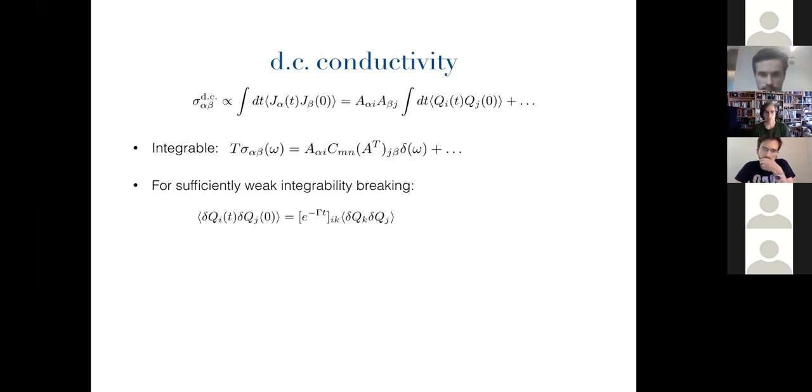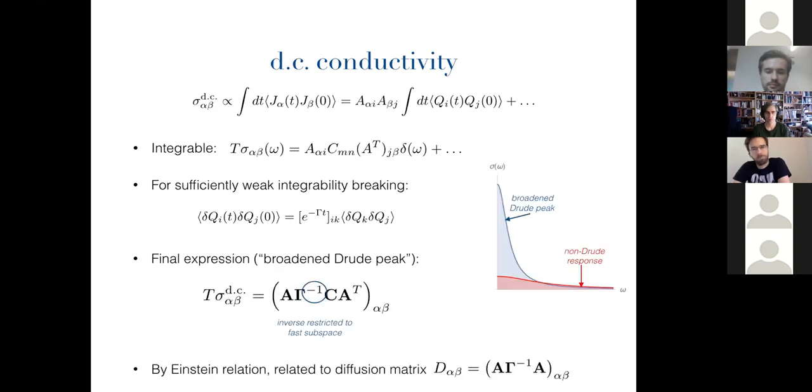So that's what happens in the integrable system, and so if you break integrability, what happens instead is that you've got to write delta Q_i of t, which is a thing that's been time evolved, you've got to propagate it back to the initial time, and you do that using the fact that it propagates the linearized matrix of decay rates. So it gives you an exponential decay, and so what you do is you find that in general, the current is going to decay as some sum of Lorentzians, and that gives you this nice compact expression for conductivity.